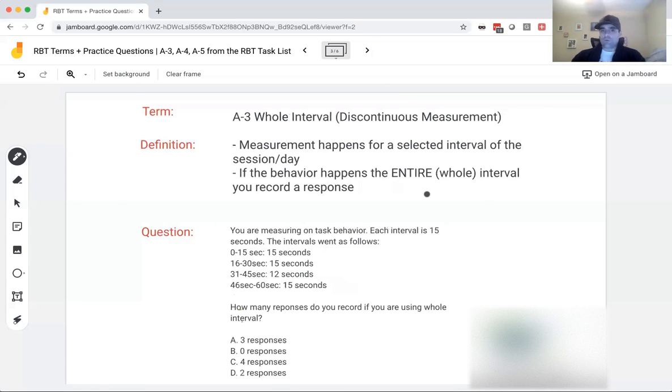Okay, whole interval. Same idea. We're doing discontinuous measurement. We're picking out a time, set a time, and then breaking it into intervals. This time for a whole interval, the behavior has to happen the entire interval or the whole interval that you record a response. So if the behavior doesn't happen the entire time, we don't record it.